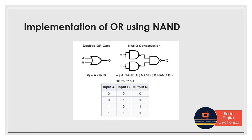Now we will see how to construct an OR gate using NAND gate. To construct an OR gate, we need two NOT gates. These two NOT gates' outputs will go into a NAND gate, and then we will see the functionality becomes equivalent to an OR gate.